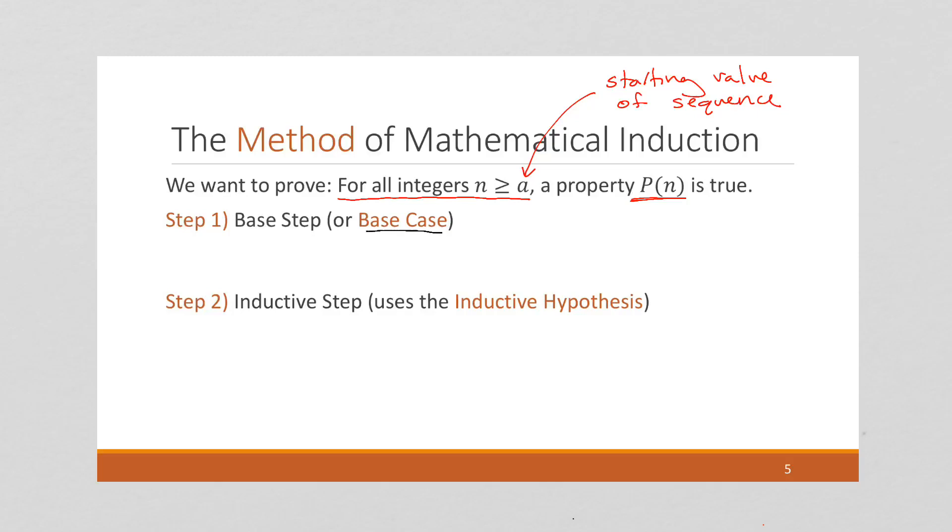The base step is kind of like showing that the first domino gets pushed over. We want to show that P of a is true. We want to show that the property, whatever property it is that we're trying to prove, is true for the first value in our sequence.